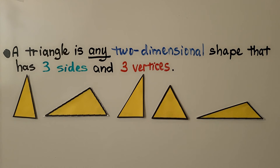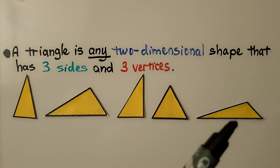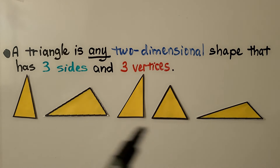A triangle is any two-dimensional shape that has three sides and three vertices. If it has three straight sides and three vertices, it's a triangle. It doesn't matter how it's shaped — it could be skinny like this, or it could be tall. It's still a triangle.